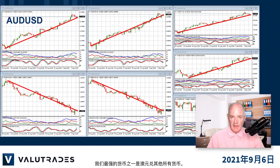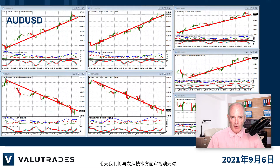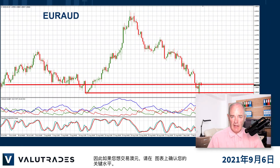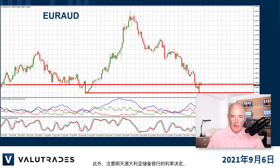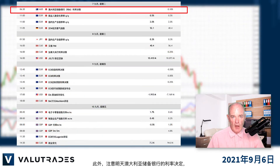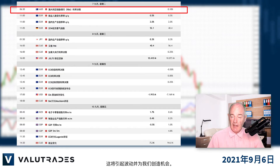One of our strongest currencies is the Australian dollar against every other counterpart. We will look again at Australian dollar pairs tomorrow from the technical side, so if you want to trade Aussie, confirm your key levels on every chart. Also watch out tomorrow for the Reserve Bank of Australia's interest rate decision, where they may announce they will postpone their tapering plan, which will cause volatility and create opportunities for us.